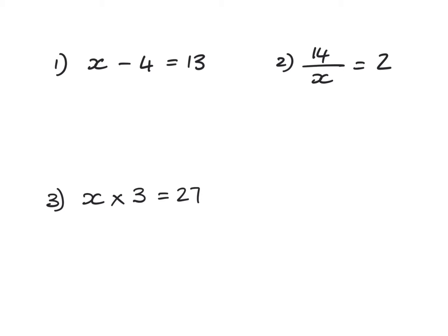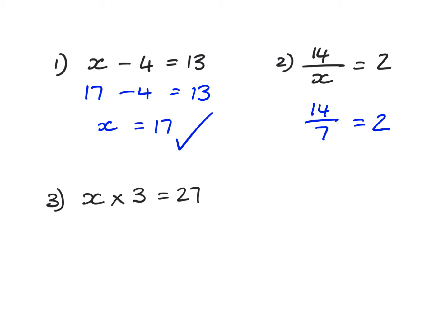The first one: x take away four is equal to thirteen. I know that seventeen take away four equals thirteen, therefore x must equal seventeen. The second one: fourteen divided by x equals two. Fourteen divided by something must give me two — fourteen divided by seven equals two, therefore x must equal seven.